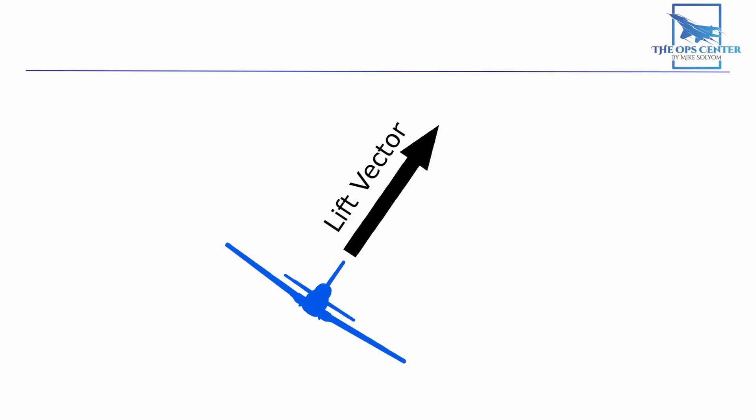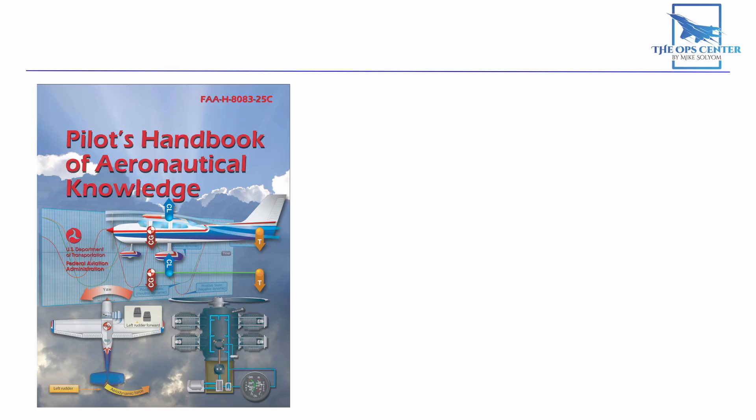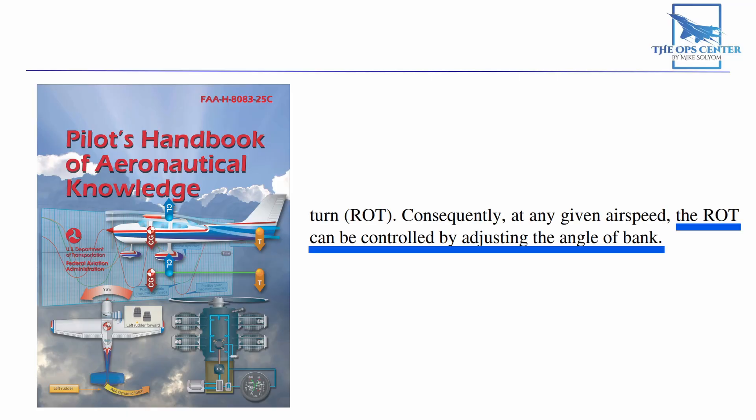When our plane is tilted to the side, part of the upward lift is being redirected as a horizontal force. There is an upward component and a sideways component to it. As the sideways component increases, so does our rate of turn. We need that horizontal part to turn the plane. This is how the Pilot's Handbook of Aeronautical Knowledge explains it. The rate of turn can be controlled by adjusting the angle of bank.